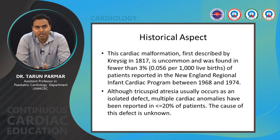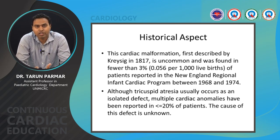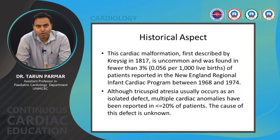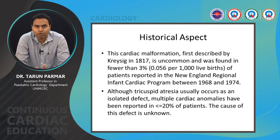From a historical perspective, this defect was first described by Kreysig in 1817. It is an uncommon defect, occurring in 3% of all congenital heart disease cases, with an overall CHD occurrence of 5 per thousand live births. Tricuspid atresia usually occurs as an isolated defect, but multiple cardiac defects can also be reported in up to 20% of patients.